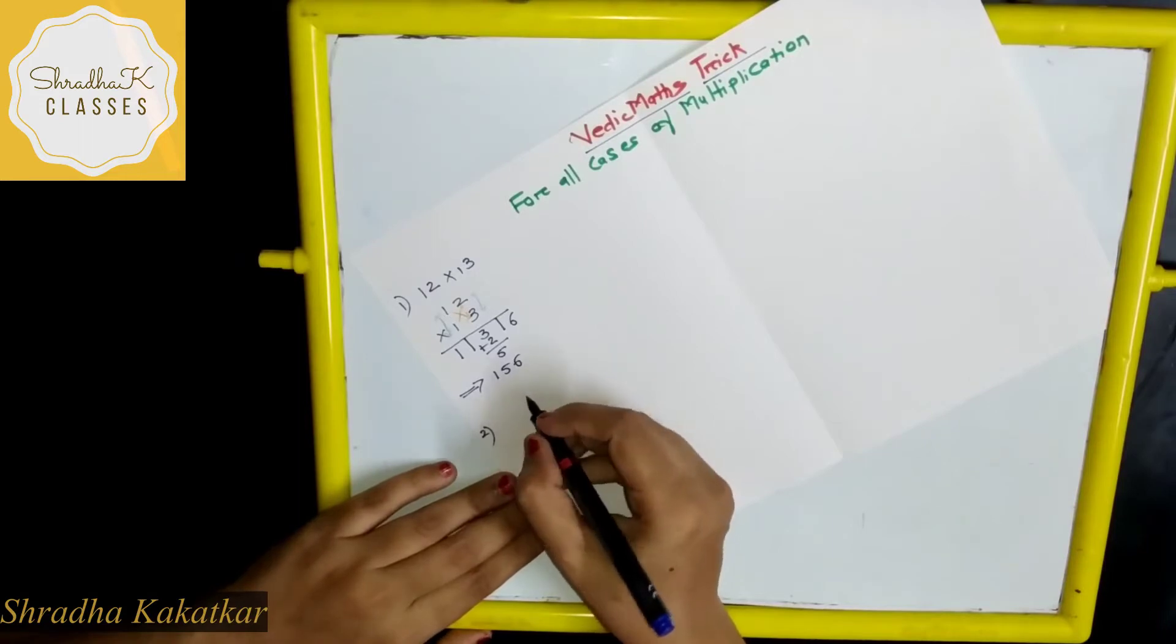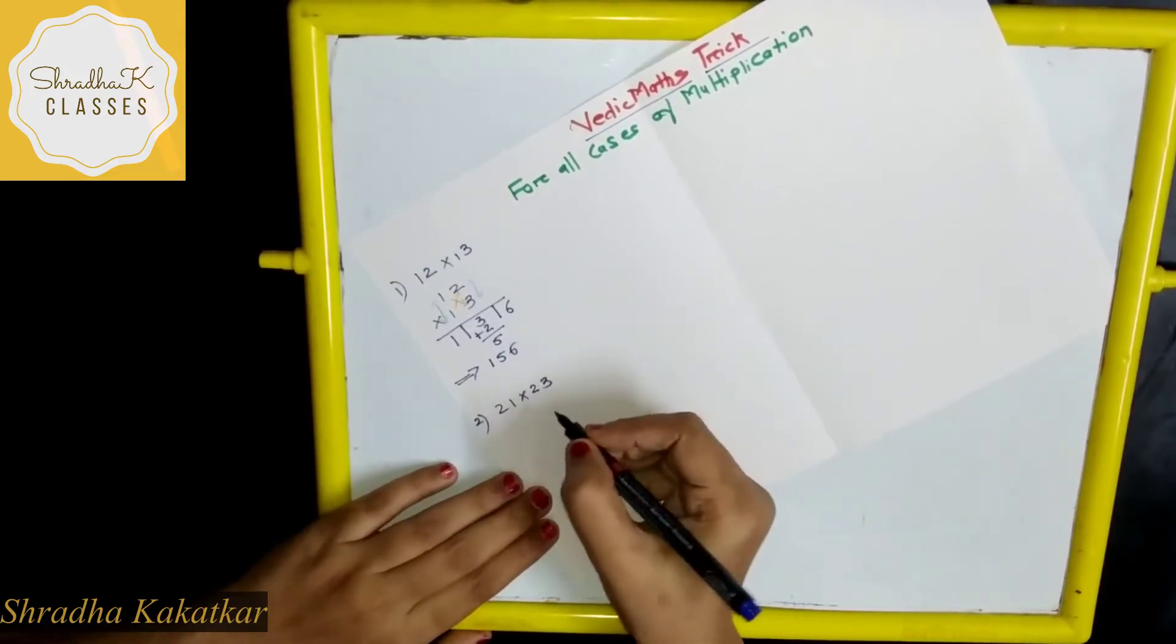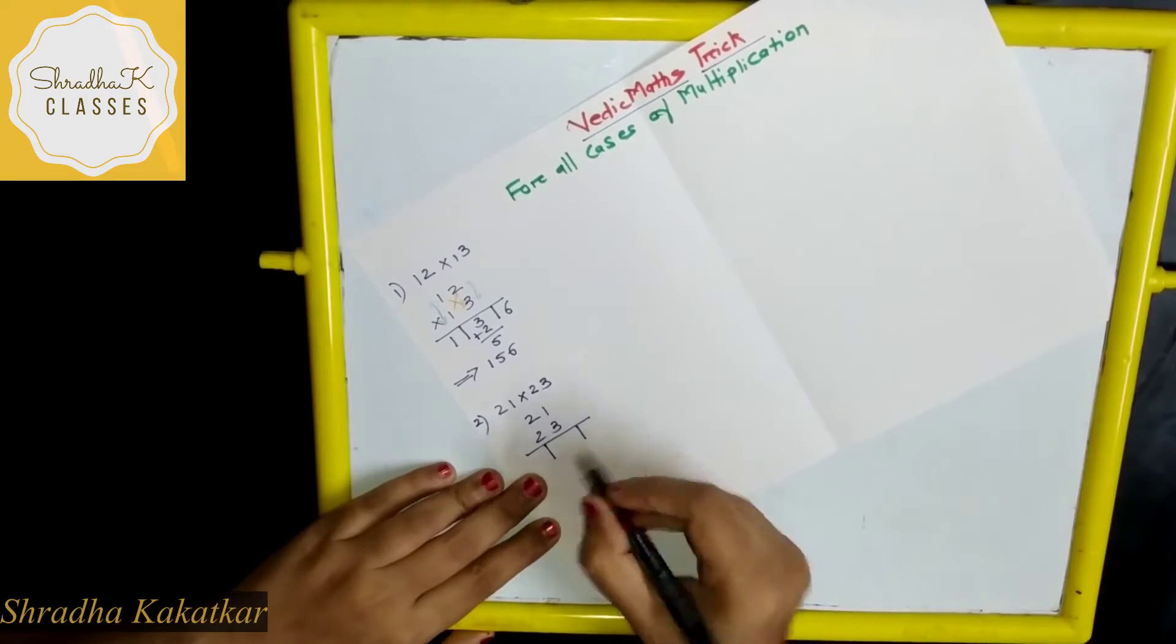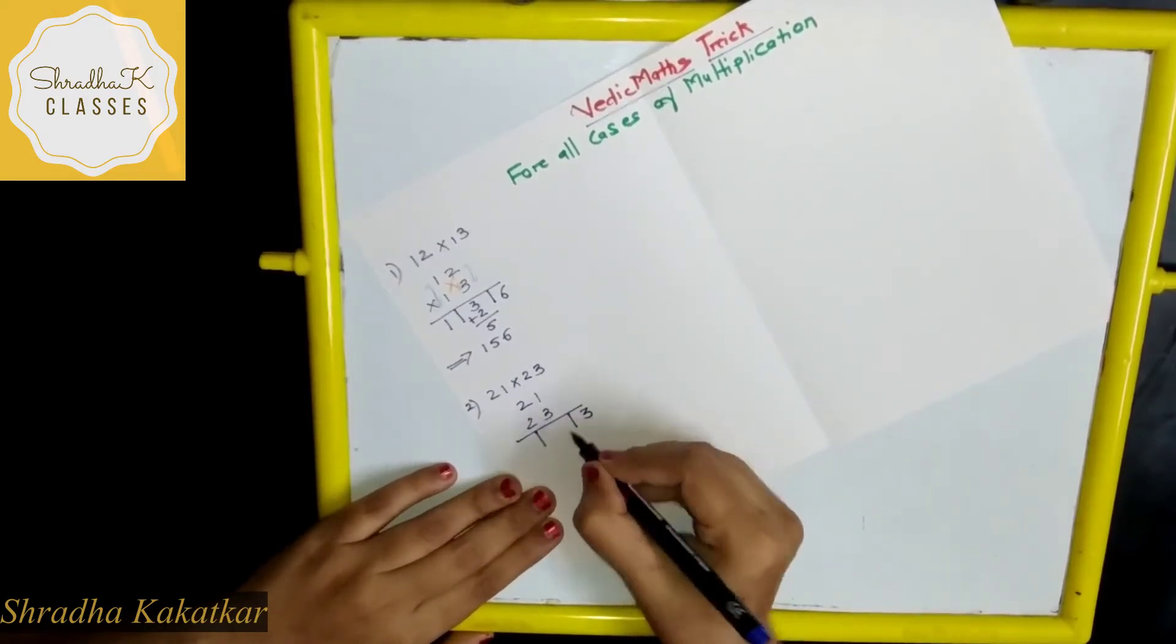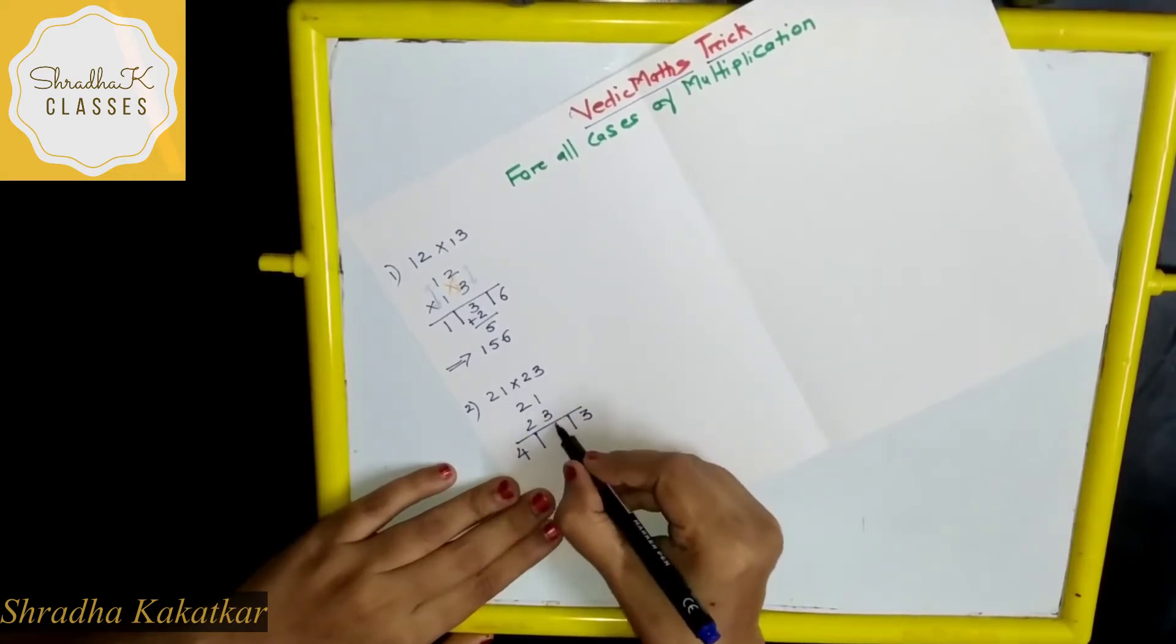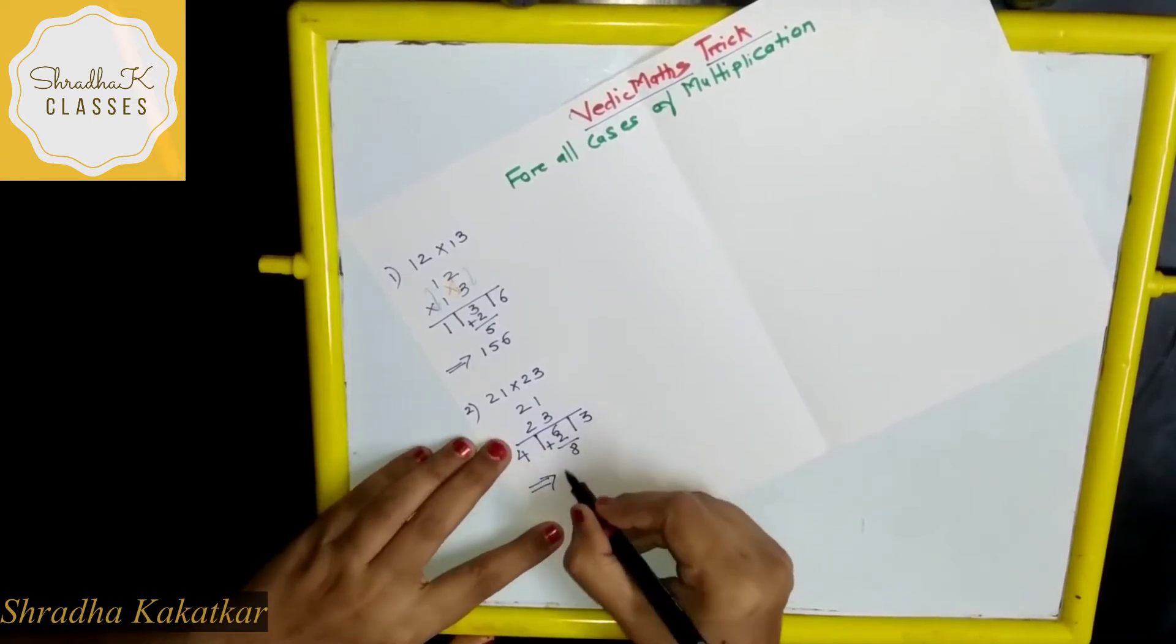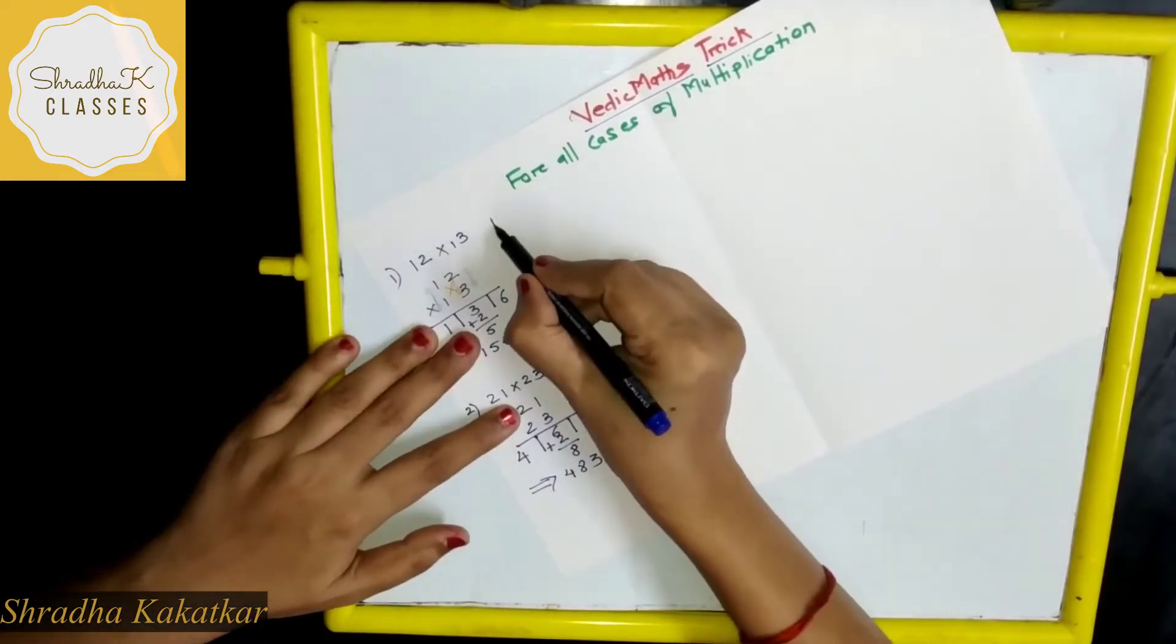Now let's take second example. Let's take 21 into 23. So 21, 23. Divide in 3 parts. 3 into 1, vertical multiplication. 2 into 2, 4. 3 into 2, 6 plus 2 into 1, 2. So this is 8. So what is our answer? 483.